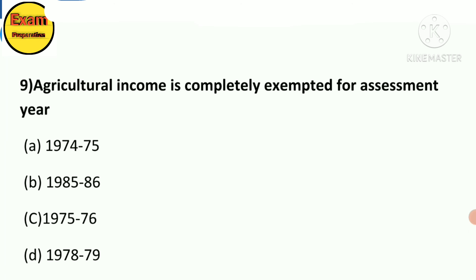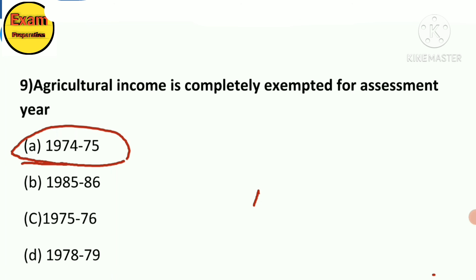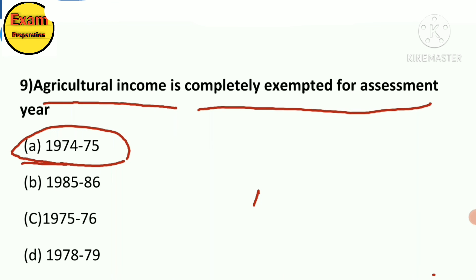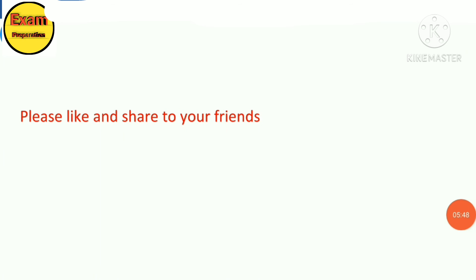MCQ 9: Agriculture income is completely exempted for assessment year — A. 1974-75, B. 1985-86, C. 1975-76, D. 1978-79. The answer is option A: 1974-75. Agriculture income is completely exempted for the assessment year 1974-75.